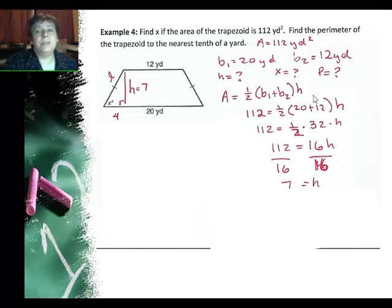Well, I'll go ahead and write the area formula and substitute in. For trapezoid, area is 1 half times base 1 plus base 2 times height. If you're using a calculator, be careful, because these two need to be added together before being multiplied. You can avoid mistakes by using parentheses. So I have 112 equals 1 half times 20 plus 12 times the height. 20 plus 12 is 32. 32 divided by 2 is 16. Divided both sides by 16, and I find the height is 7.